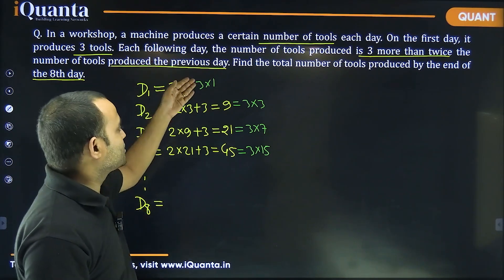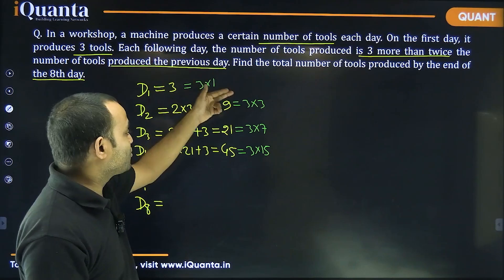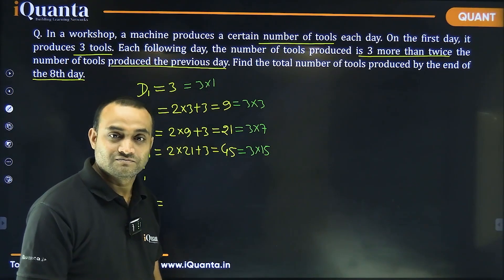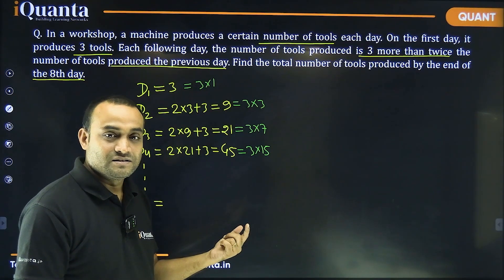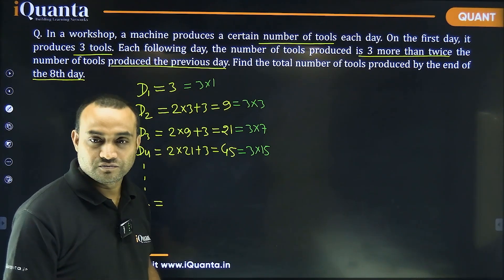So, what are we getting? Three into one, three into three, three into seven, three into fifteen. One, three, seven, fifteen. Does that ring any bell in your mind? All of these numbers are one less than consecutive powers of two.